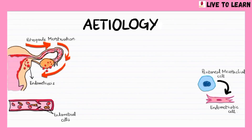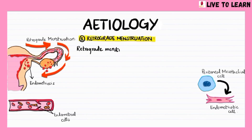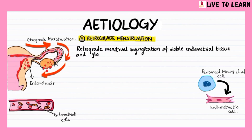The etiology of endometriosis is unknown, although there are several theories. The retrograde menstruation theory postulates that retrograde menstrual regurgitation of viable endometrial tissue and glands along patent fallopian tubes leads to endometriosis.